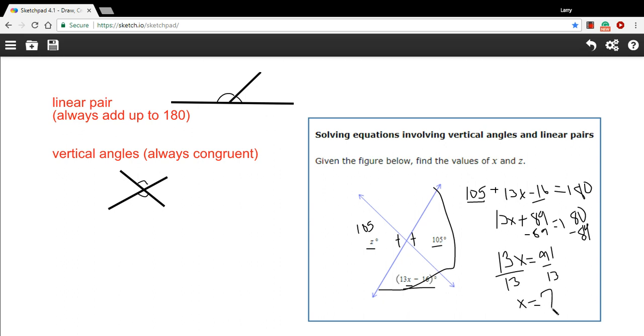So z is 105 and x is 7. That is how to use your knowledge of vertical angles and linear pairs to solve some equations. Thank you.